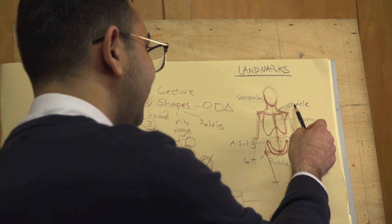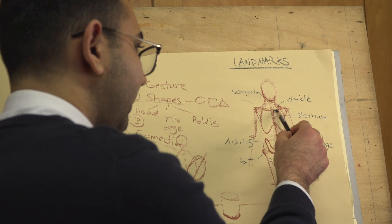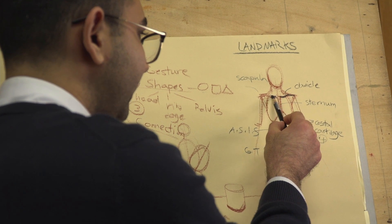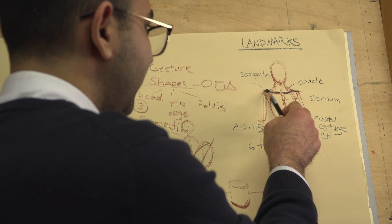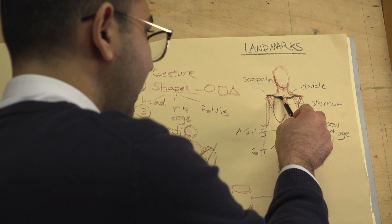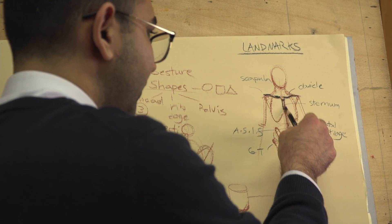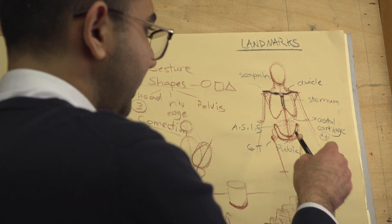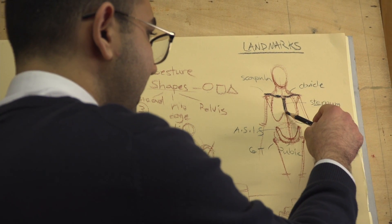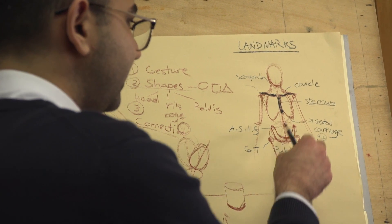First, let's learn clavicle — the bony part on the ribcage. It has an S curve to it, with three parts. Then we have sternum on this part, which is quite important. And then at the end you have the xiphoid process at this point.